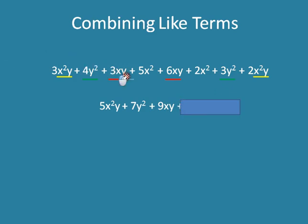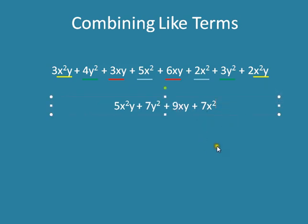Last but not least, I have an x squared — 5x squared and another x squared, 2x squared. Those are like terms because they both have x squared after the number. So 5x squared plus 2x squared is 7x squared. See how I color-coded them? You just look at which variables are the same after the number — all my x squared y's, all my y squareds, all my xy's, and all my x squareds.